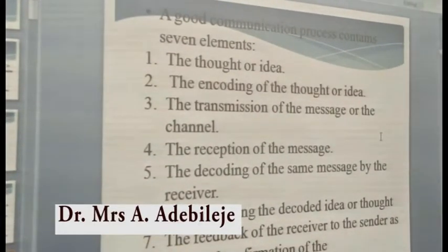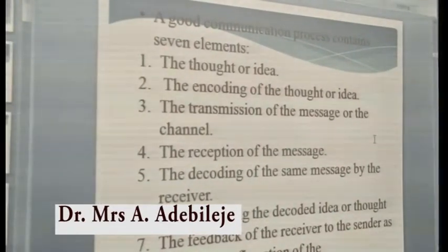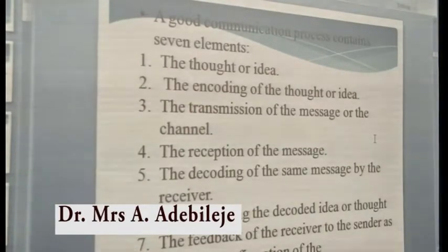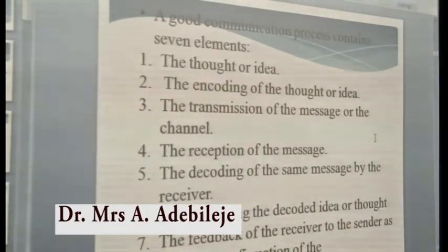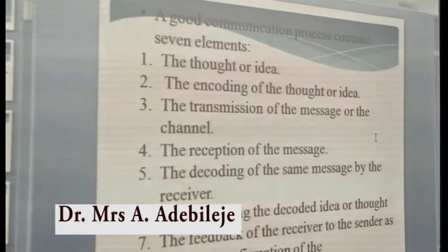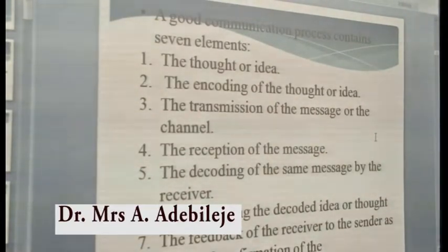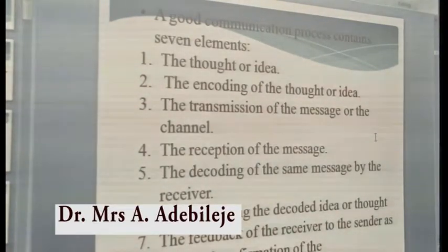Then, naturally, the next process will be the reception of the message. In other words, there must be somebody the information is meant for. That person will be the one to receive that message, that thought or that idea. The fifth process involves the decoding of the message by the receiver.